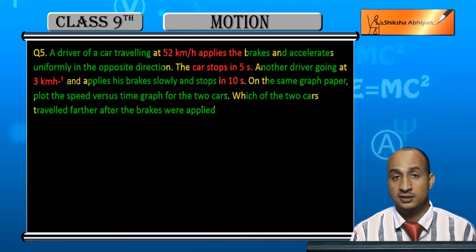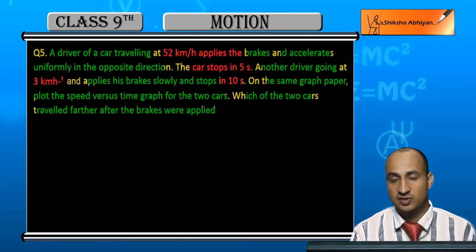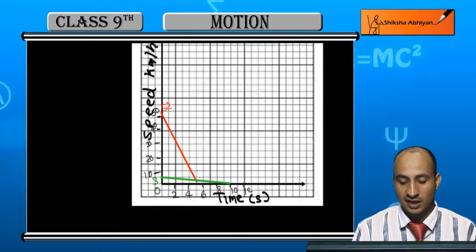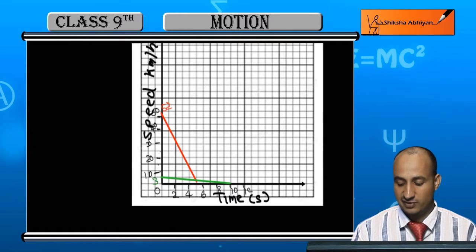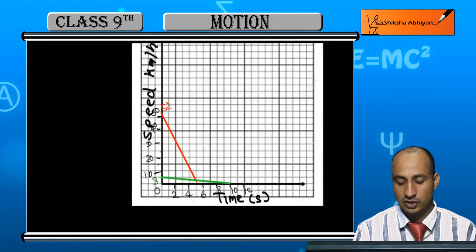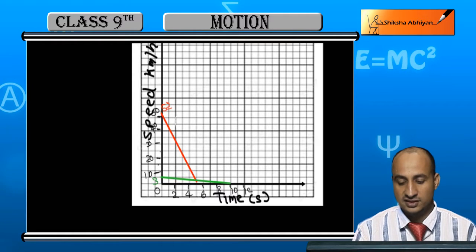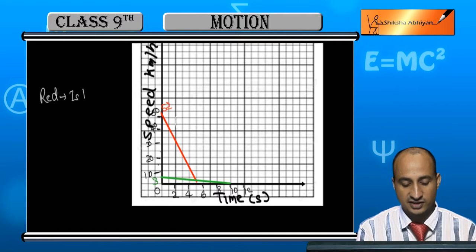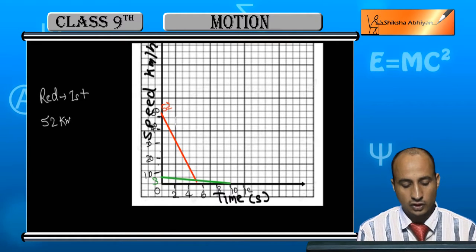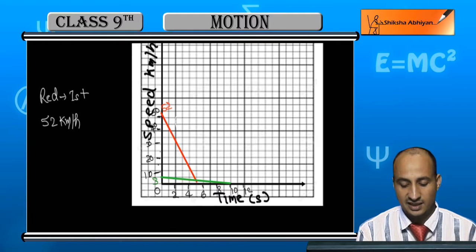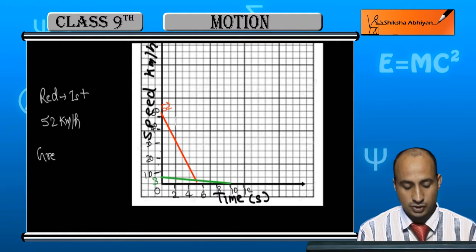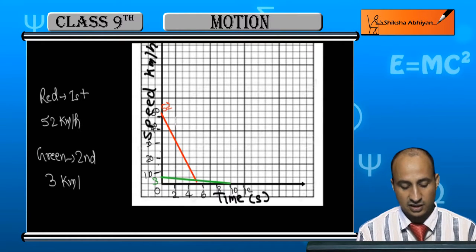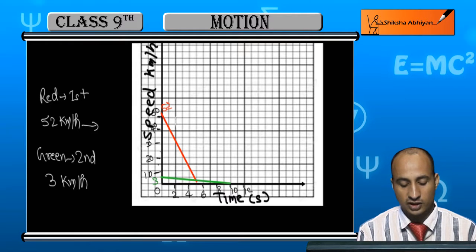You have to make the speed-time graph and calculate the distance. Here I have already made this graph — speed in km per hour on the vertical axis and time in seconds on the horizontal axis. The first driver is represented in red, starting from 52 km per hour. The second driver is shown in green, starting from 3 km per hour.